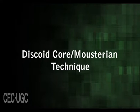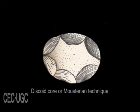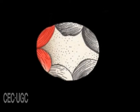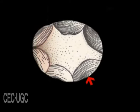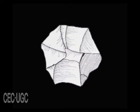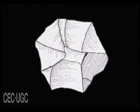The discoid core or Mousterian technique is also a prepared core technique for obtaining a flake. In this case, the prepared core resembles a circular or disc shape. Any one of the flake scars on the core serves as a striking platform, and a flake with two to four truncated flake scars on the dorsal surface could be detached by striking with a stone hammer. The flake scars left on the core after detaching the first flake can also serve as a striking platform for detaching another flake, so several flakes could be obtained from a single discoid core.